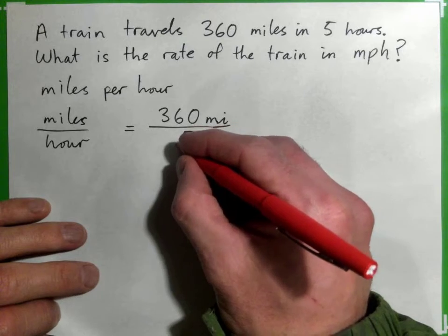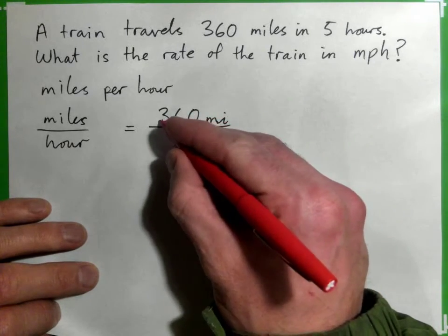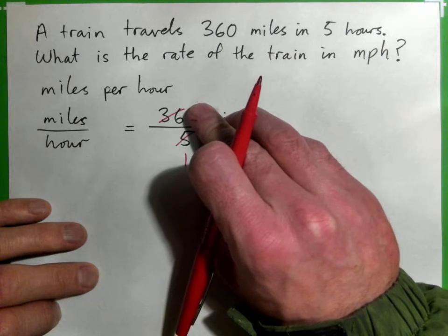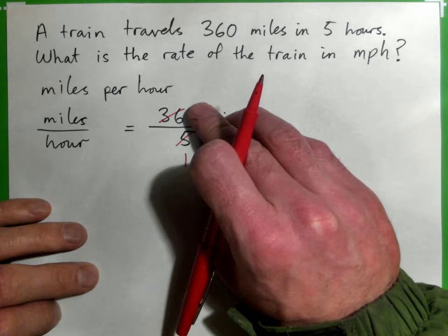So 5 into 5 goes once. 5 into 36 goes how many times? 6. No. 6 times. No, 7.